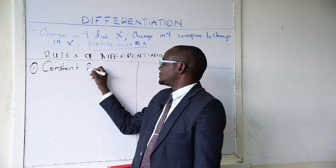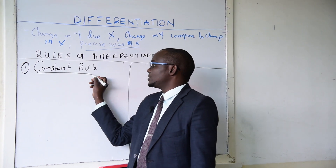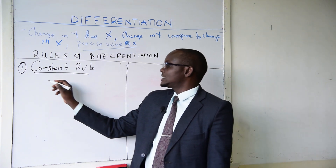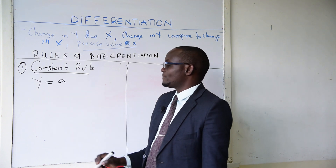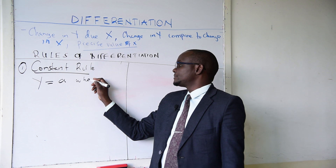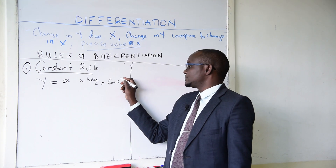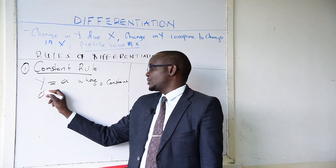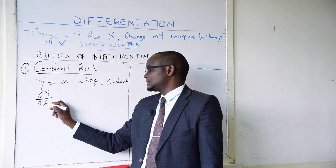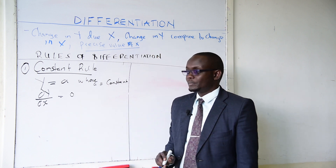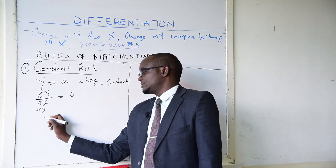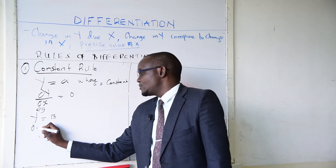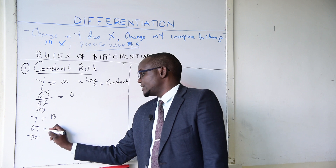The constant rule: when you talk about the constant rule, this is differentiation where we have a constant involved. For instance, when you are given y equals to a, and a is a constant — just a letter or an integer alone — when we get dy/dx, the result equals zero. For example, if y equals 18, then dy/dx equals zero.